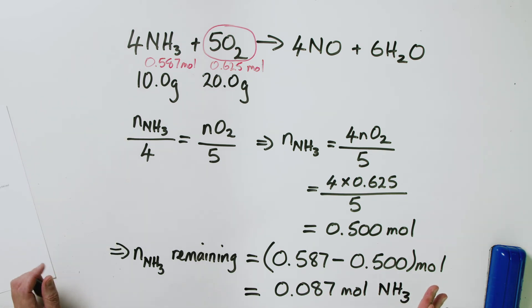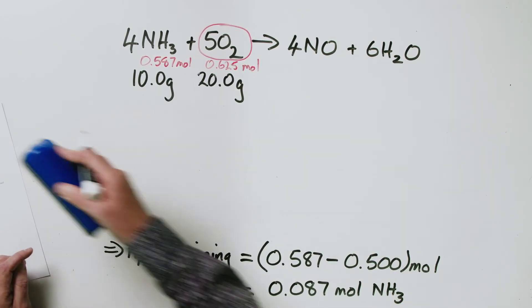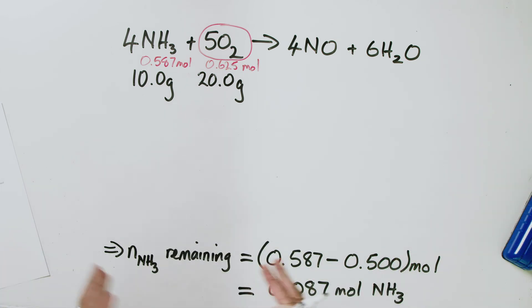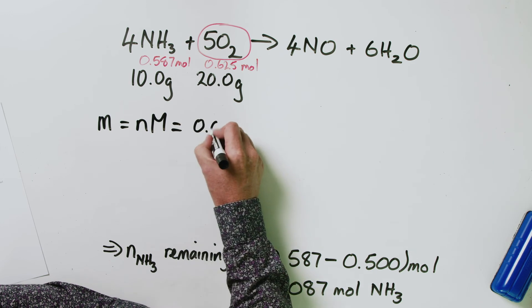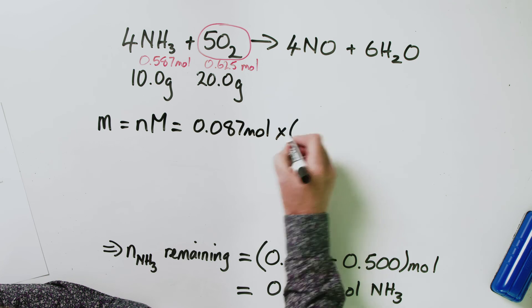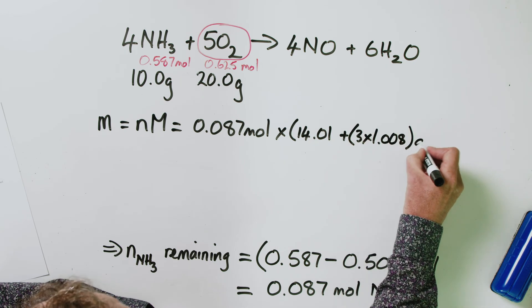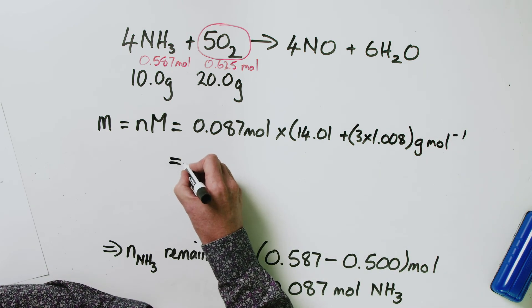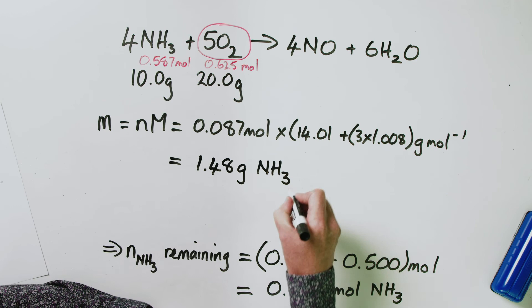So 0.087 moles of ammonia is left over. To find the corresponding mass: mass of remaining ammonia equals 0.087 moles multiplied by the molar mass of ammonia — 14.01 plus 3 times 1.008 grams per mole — and that gives 1.48 grams of ammonia remaining.